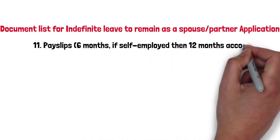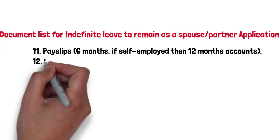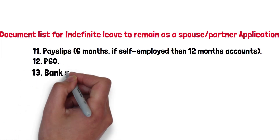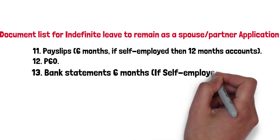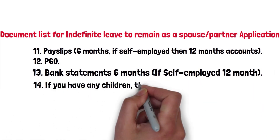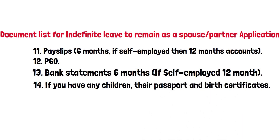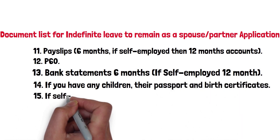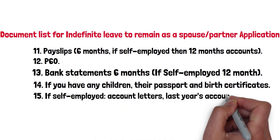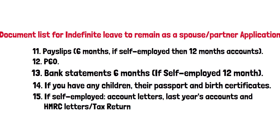Fourth, was your first leave granted before 2012? Select yes if your very first family route visa was given before 2012, and select the date and year when your visa was given. Select no if your very first leave was after 2012. Then they will ask you to give your email and create a password so you can save your application and change it later if you want. Your application will then start and you can save it and complete it in your own time.